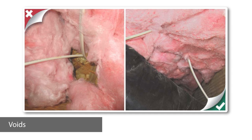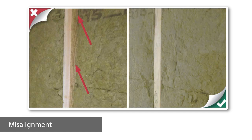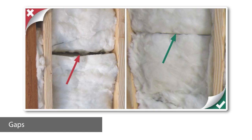Voids are defined as pockets or areas where insulation is missing. Misalignment is when insulation is placed incorrectly and is not in touch with the air barrier, which can lead to a loss of energy through convection. Gaps are spaces between insulation and framing or between pieces of insulation that extend from the interior to the exterior surface of the wall cavity.